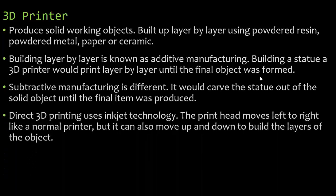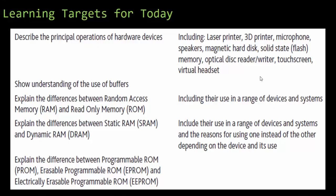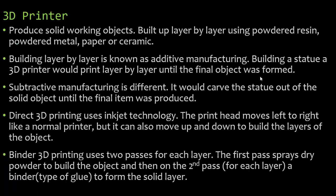Direct 3D printing uses inkjet technology. The print head moves left to right like a normal printer, but it can also move up and down to build the layers of the object. Binder 3D printing uses two passes for each layer. The first pass sprays dry powder to build the object, and on the second pass, a binder — which is a type of glue — is used to form the solid layer, binding it together and gluing each layer together.